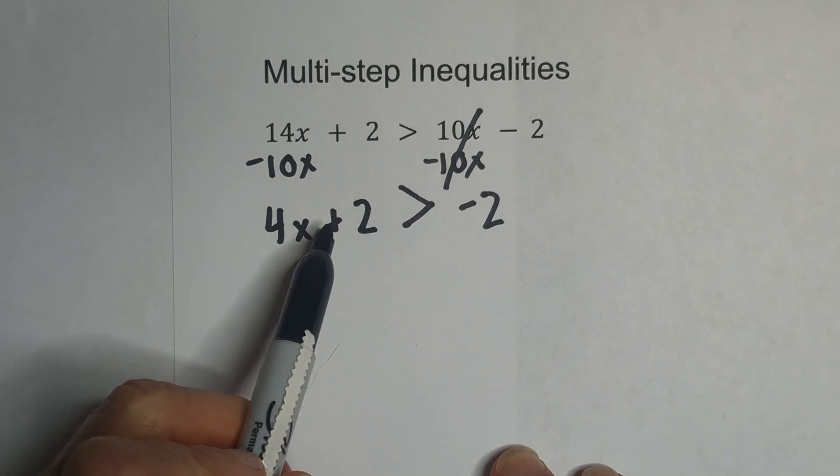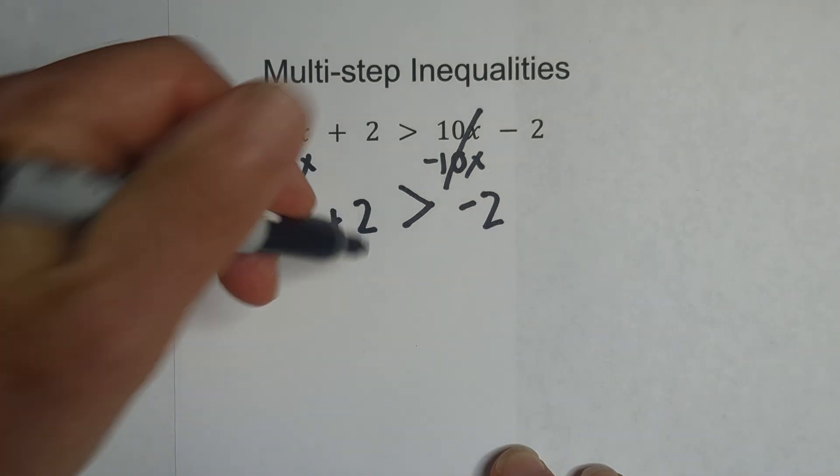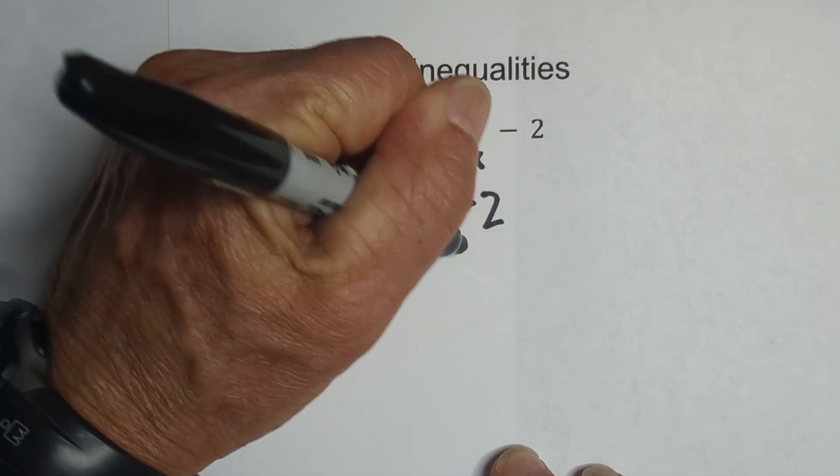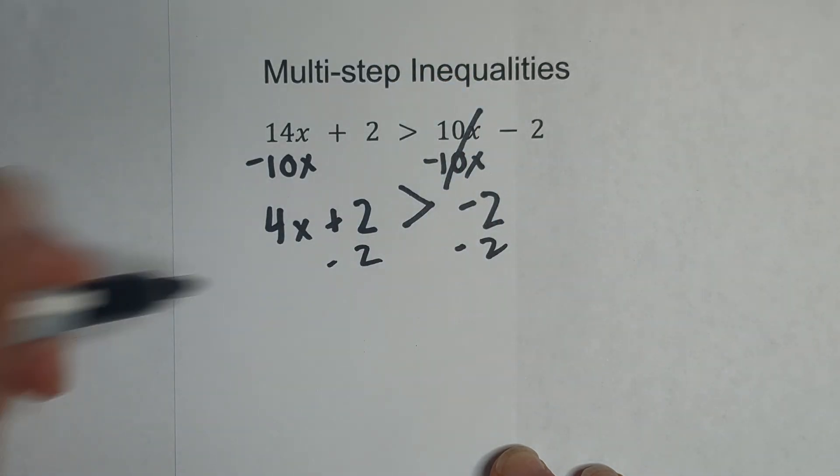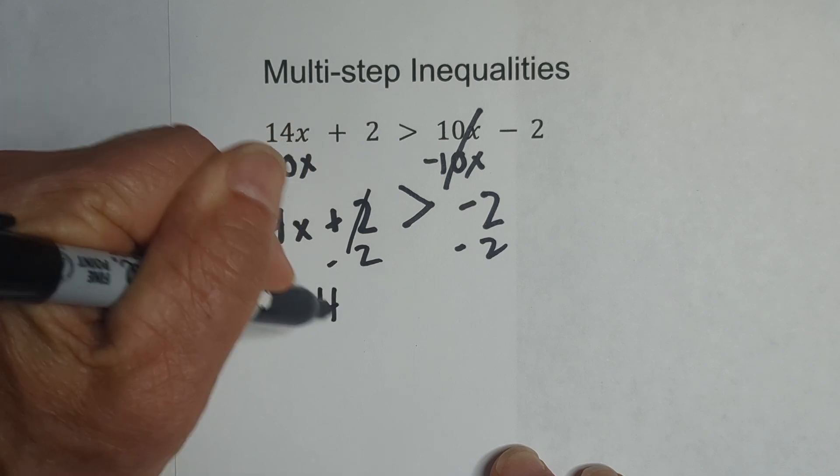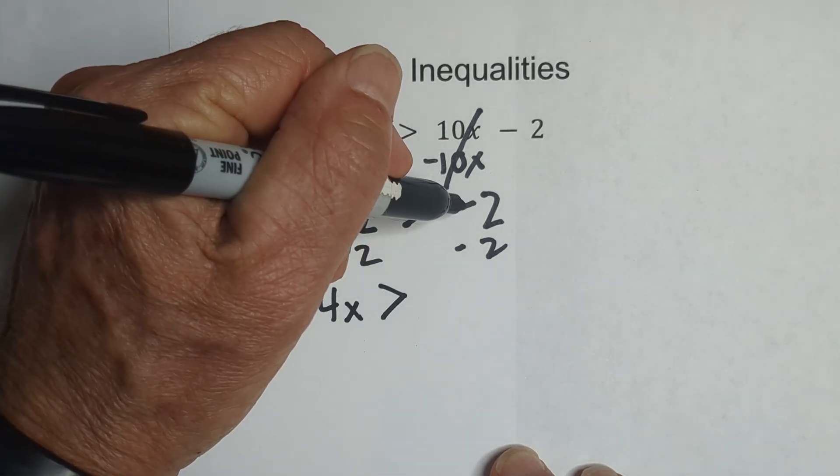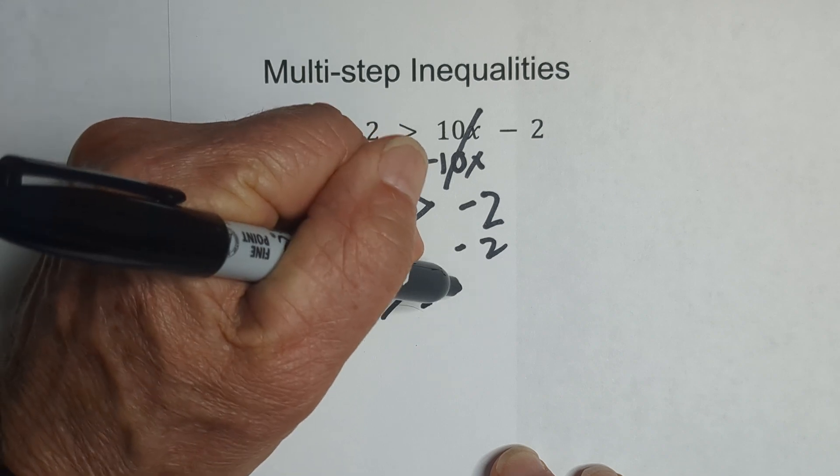Now what we need to do is move the constant to the other side of the inequality. We can do that by subtracting both sides by 2. These cancel and bring down the 4x is greater than negative 2 and negative 2 is negative 4.